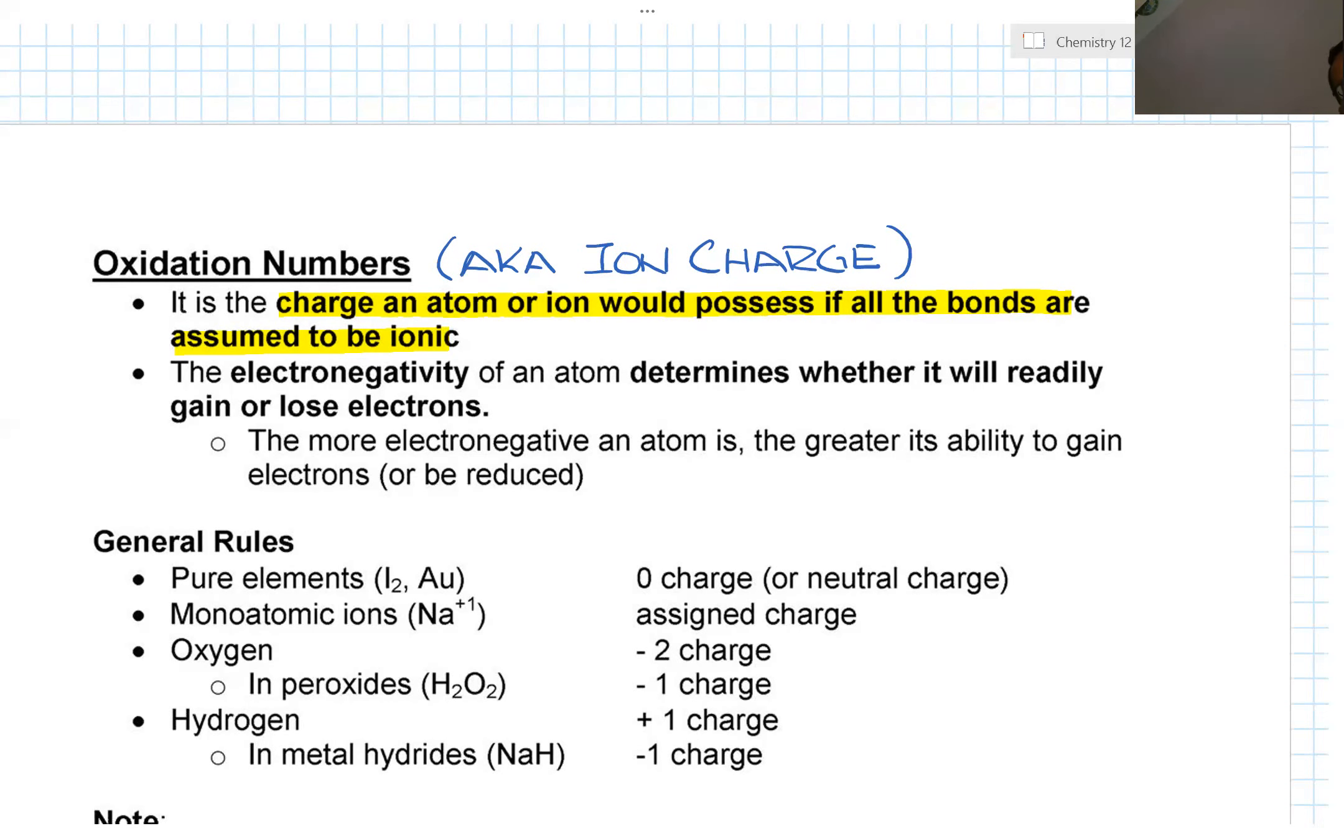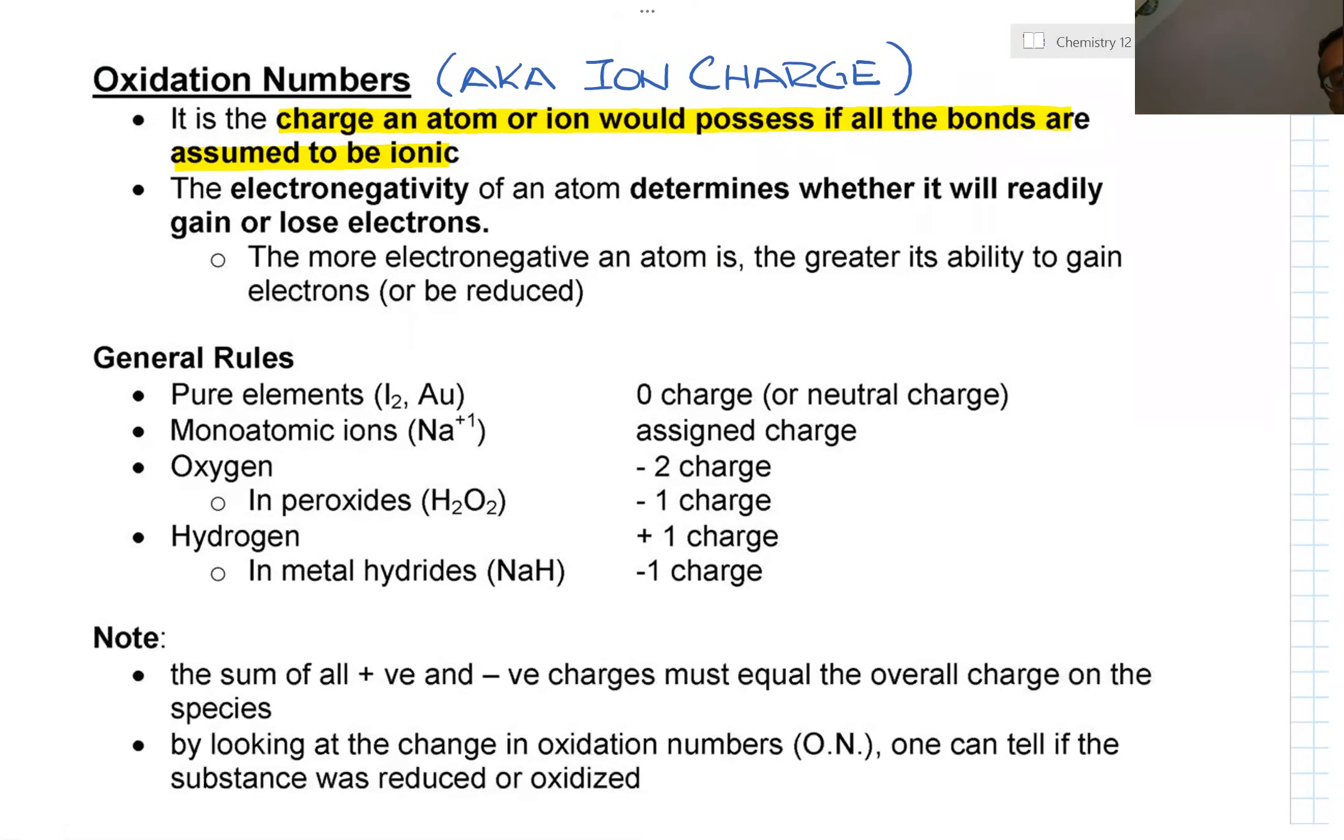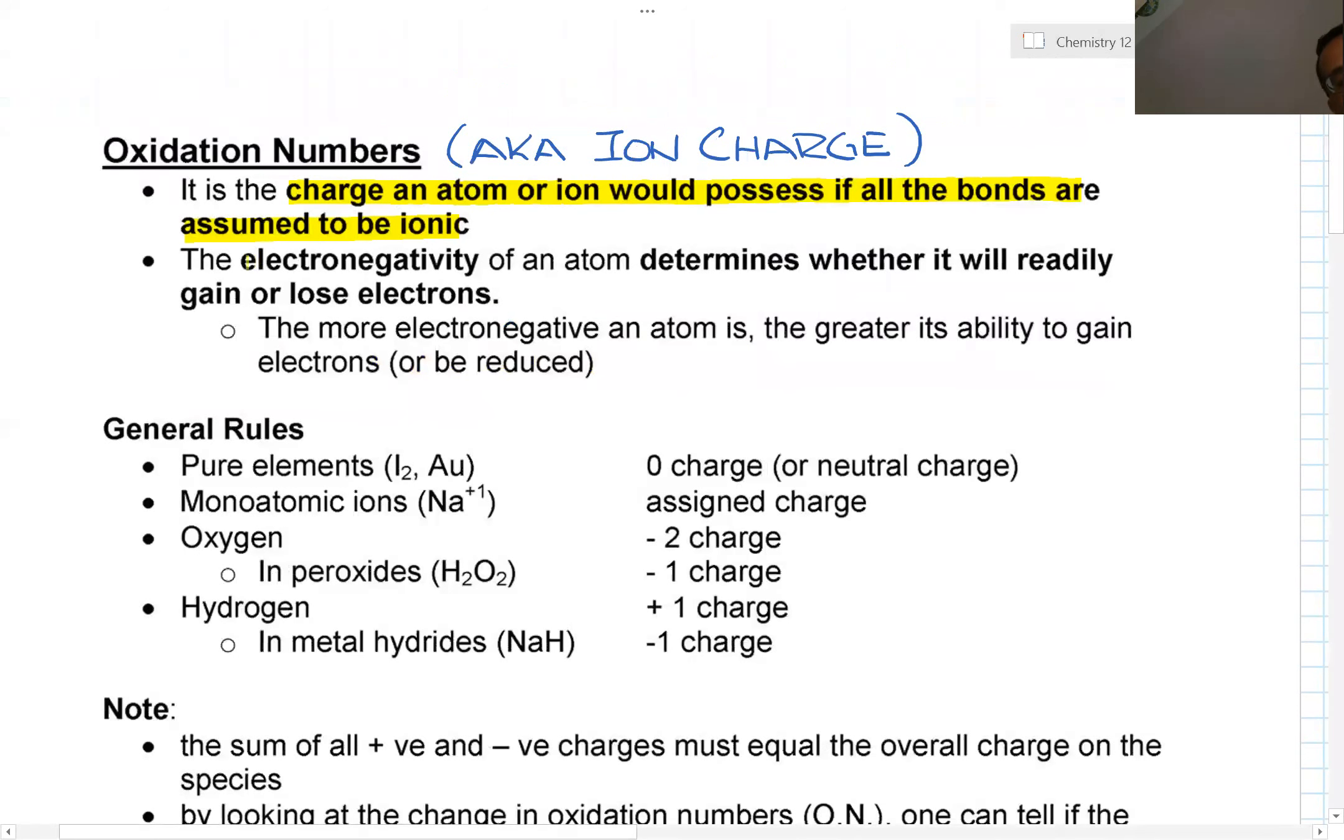Okay, now the electronegativity of an atom determines whether it will readily gain or lose electrons. The more electronegative an atom is, the greater its ability to gain electrons or be reduced.